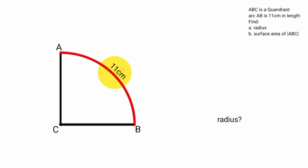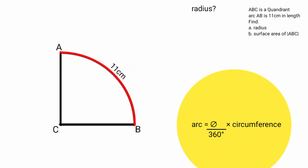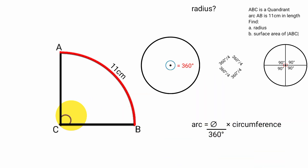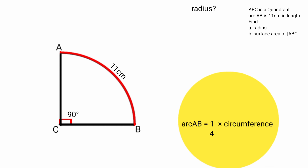We know that the length of an arc of a quadrant is exactly one-fourth of the circumference of the circle, because the formula for finding the length of an arc is theta over 360 times circumference. Theta is the angle at the center, which is this angle here, and we know that the angle of a quadrant is 90 degrees. So 90 degrees over 360 degrees is 1 over 4.